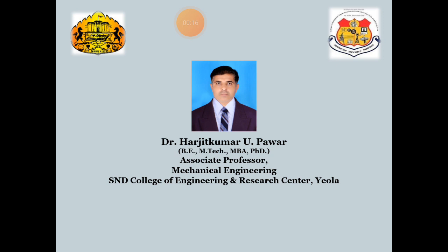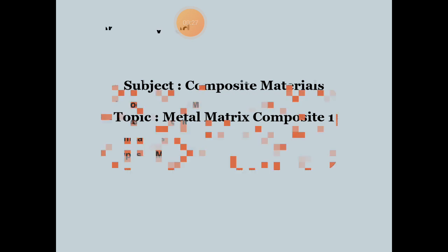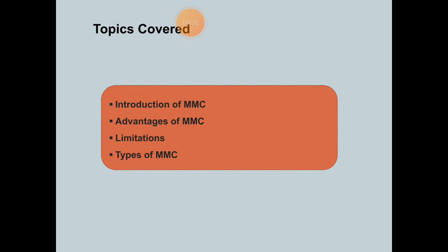Today we will discuss a new topic: metal matrix composites as a type of composite material. Metal matrix means metal is one part of the composite. The topics covered are: introduction to MMC — metal matrix composites — advantages of MMC, limitations, and types.